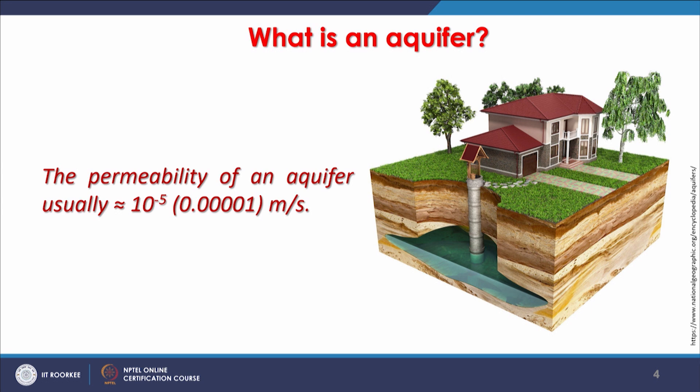In defining the aquifer we used the term permeability. The permeability of an aquifer may be of the order of 10 to the power minus 5 — a very small movement of water in meters per second. Even converting to hours, it is still a very small value. That is why the movement of water in underground aquifers is very slow.